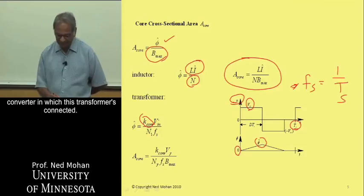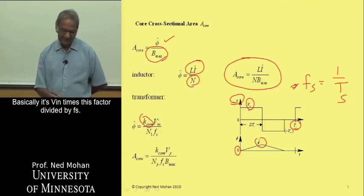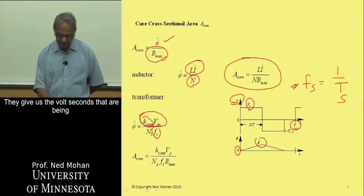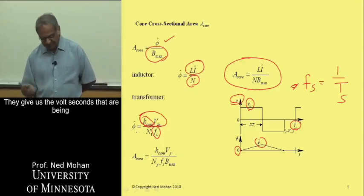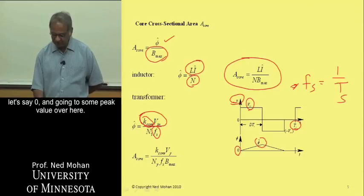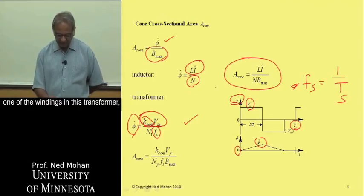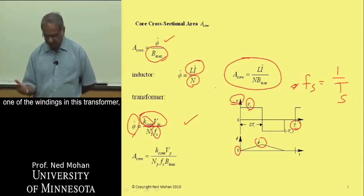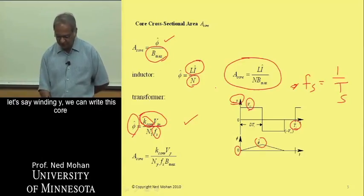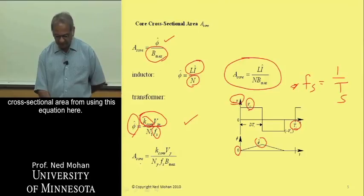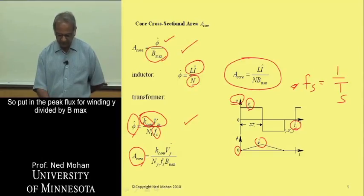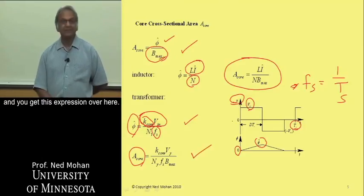Basically it is V1 times K_converter divided by Fs that gives us the volt-seconds being applied, with flux starting from zero and going to some peak value. We get that expression, and therefore, picking winding Y in the transformer, we can write the core cross-sectional area using that equation — the peak flux for winding Y divided by Bmax gives us that expression.